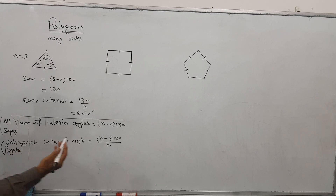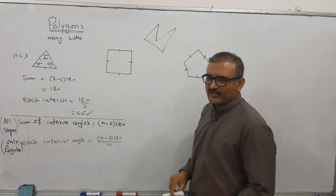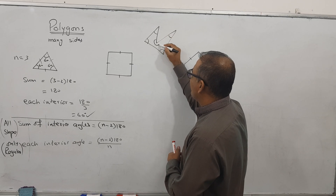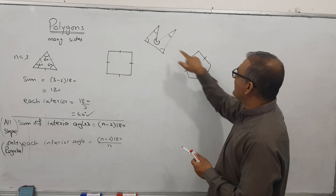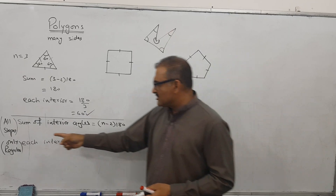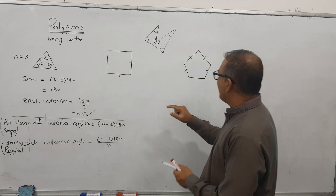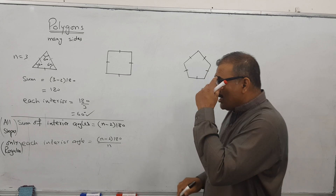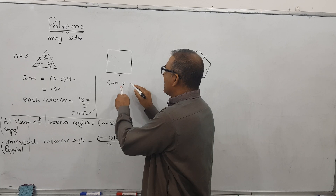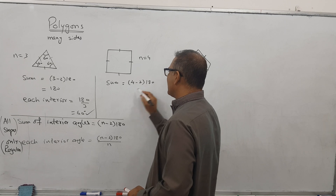So what is regular? Look — this is a pentagon with 5 sides; this is also a pentagon but it is not regular. The first formula is valid for all shapes. The second formula is only for regular shapes, meaning all sides are equal. For the square, N is 4: 4 minus 2 into 180 gives 360. And 90 plus 90 plus 90 plus 90 equals 360. Each interior angle: 360 divided by 4 equals 90.